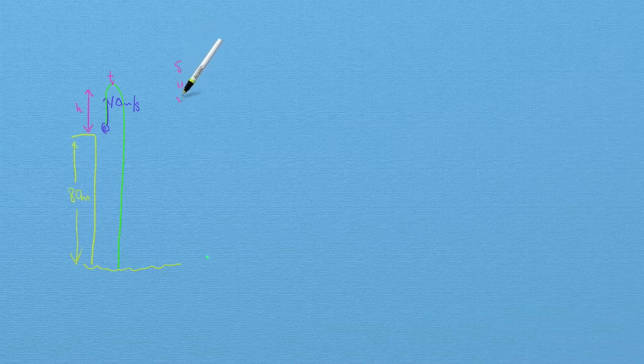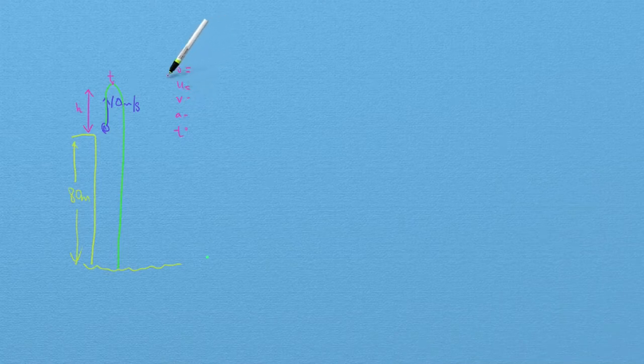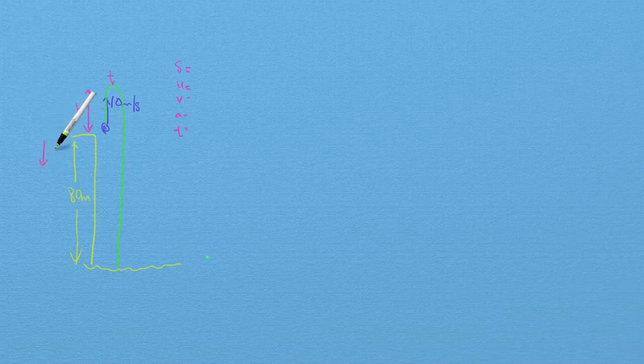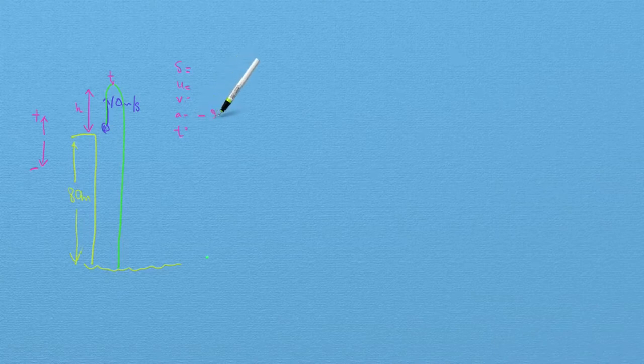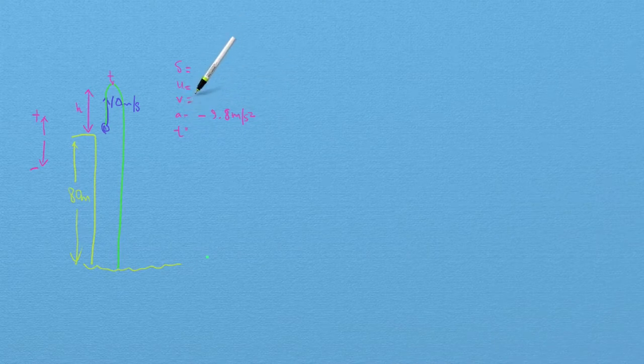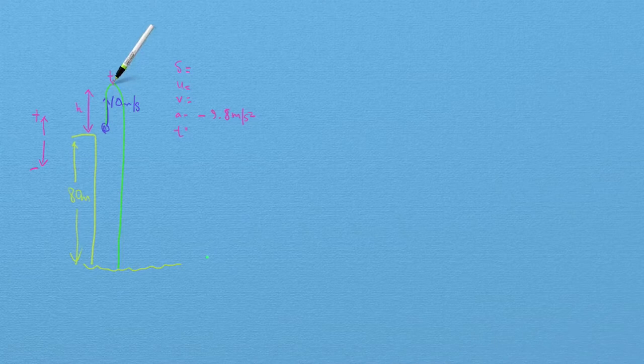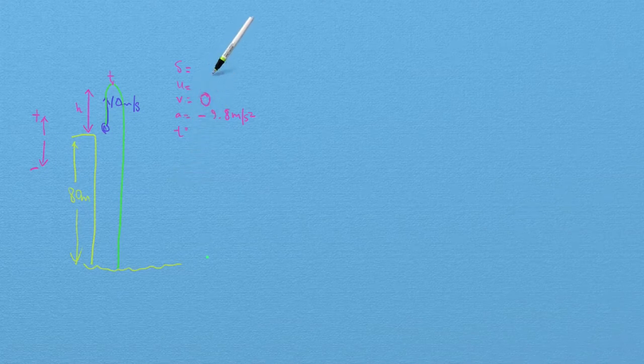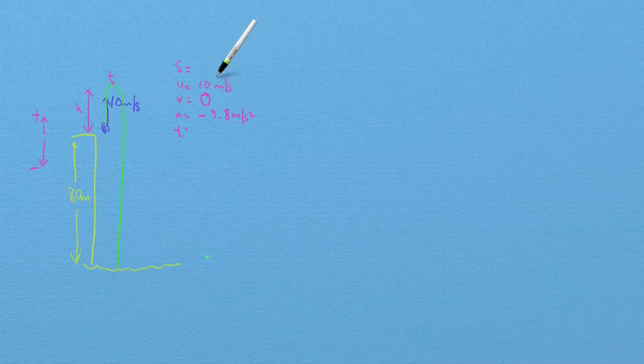So let's write our kinematical variables down and let's choose a direction. I'm going to choose up positive this time just to switch things around. And if I were to do that my acceleration is going to be minus 9.8 meters per second squared. And the thing to notice here is that when the ball reaches its maximum height it needs to stop for a little while to turn around and go back down. So the final velocity is going to be zero. And I also have that the initial velocity is 10 meters per second because that's how fast I started throwing it upwards.